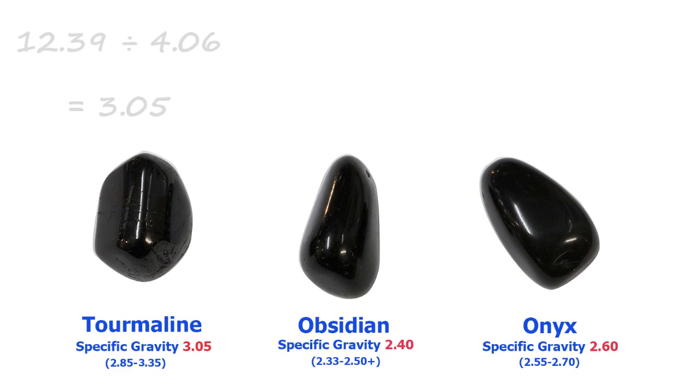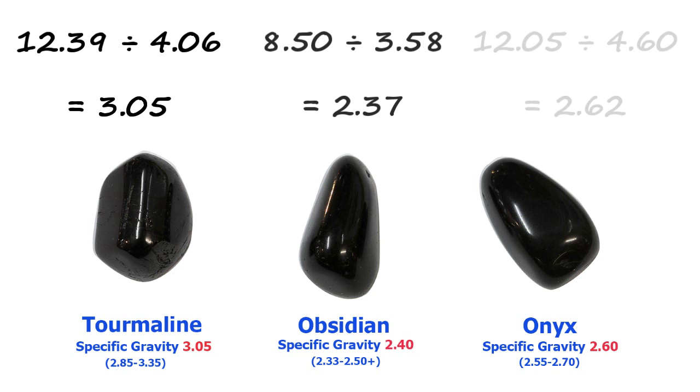So that's it, we just take a calculator and we divide the weight of the stone by the stone's weight suspended in water. The result is the specific gravity of the stone.